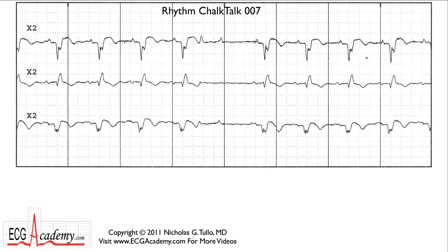This is a Holter monitor that I picked up, and it's three simultaneous leads. We're going to get started with looking at the forest. What stands out very clearly in this strip is that there's a pause here. There seems to be a regular rhythm going along. If we try to measure the rate starting with this heavy line: 300, 150, 100, 75 — it's just about 75 beats per minute. So we have a regular rhythm of 75 beats per minute. The QRS complex is rather wide, so there looks like a bundle branch block is going on. The duration is at least 160 milliseconds.